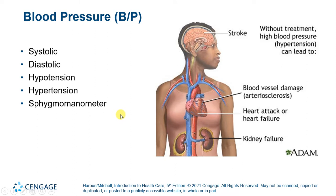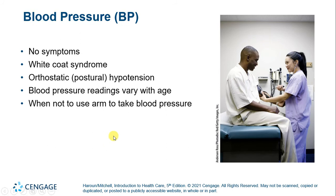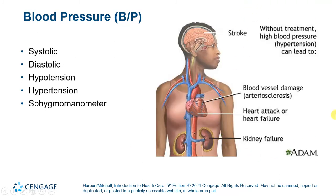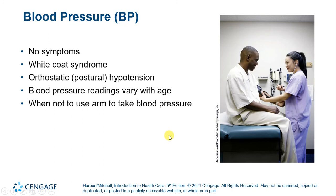Blood pressure is a very important and often used vital sign, so know what these different terms mean: systolic, diastolic, hypotension (low blood pressure), hypertension (high blood pressure), and sphygmomanometer — the blood pressure cuff. Blood pressure can be high without any symptoms, which is why we call it a silent killer — it does a lot of damage. White coat syndrome means you get nervous in the doctor's office and your blood pressure goes high, but at home it seems fine. Orthostatic or postural hypotension is when people are lying down, stand up, and their blood pressure drops — they may feel dizzy and it increases fall risk, so it's important to get up slowly. Blood pressure also varies with age.